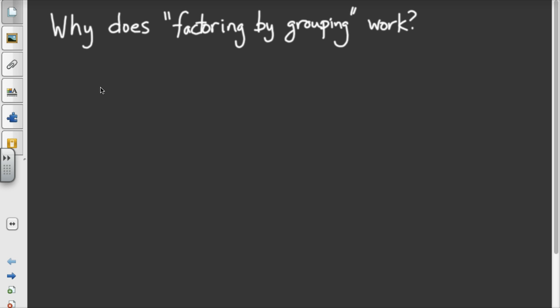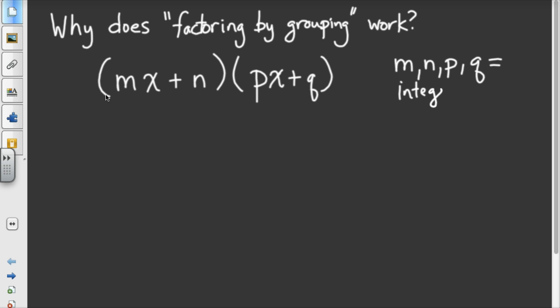So if I have two algebraic binomials, some term with an x plus some constant term multiplied by another one, just like it, but with different numbers. Now keep in mind, m, n, p, and q here are just random variables. I didn't want to use a, b, and c because we used them in the general formula, and I didn't want to use x because we've already got it. So m, n, p, and q are just integers, are just numbers.